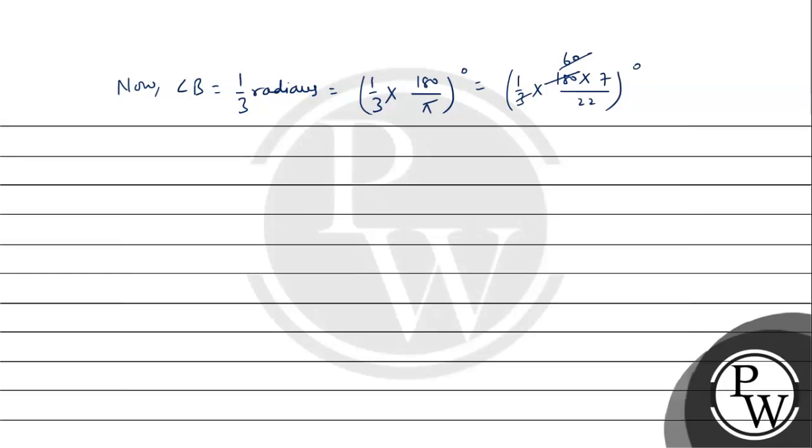So, 1 upon 3 into 180 into 7 upon 22 degrees. 3 into 60 180, 2 into 30, 60, 2 into 11, 22. So, 210 upon 11 degrees. So, here angle B has come to us, 210 upon 11 degrees.